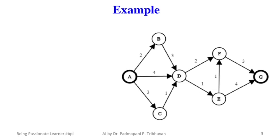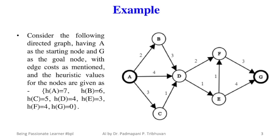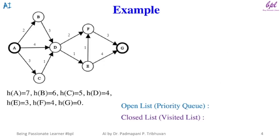Now let us apply this algorithm on the graph shown on the slide. Consider a directed graph having A as the starting node and G as the goal node. Edge costs are also mentioned in the graph. The heuristic values are: h(A)=7, h(B)=6, h(C)=5, h(D)=4, h(E)=3, h(F)=4, h(G)=0.